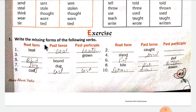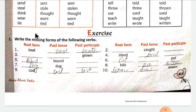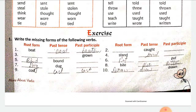Exercise: Write the missing form of the following verbs — nim likhit verbs ka missing form likhiye. Root form, past tense, and past participle. If we know even one form of any verb, we can write the remaining two — but only if we have learned and memorized them. So parrot all the forms — memorize them all.